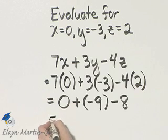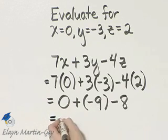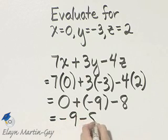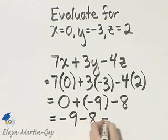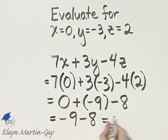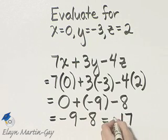Now let's finish. I have 0 plus negative 9, that's negative 9, minus 8. If you need to, go off to the side and rewrite that as an equivalent addition: it would be negative 9 plus negative 8. You would be adding two numbers with the same sign — add their absolute values and keep the sign.